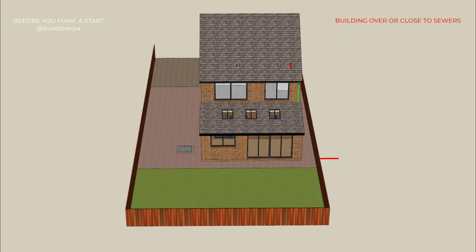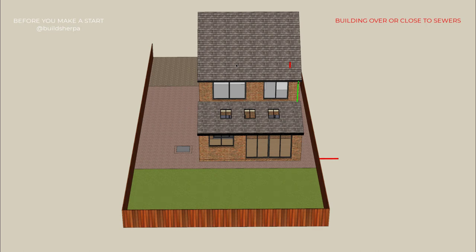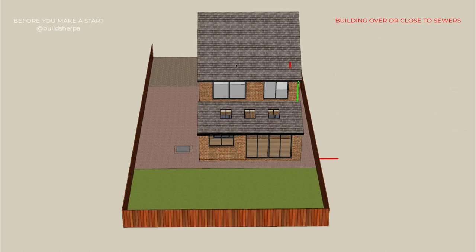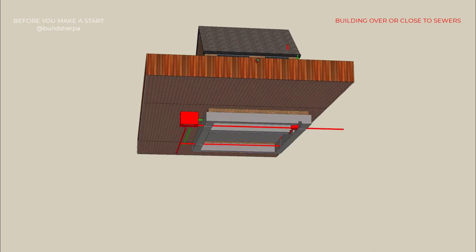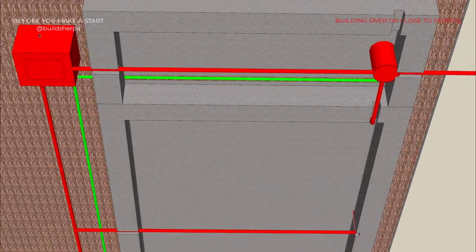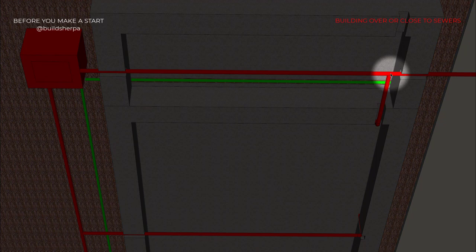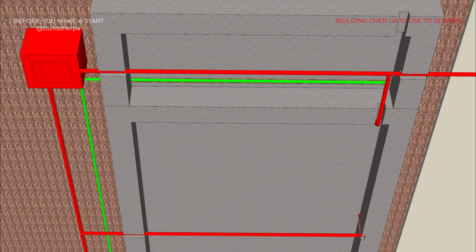If I now add a single storey extension to the rear, this covers one of the manholes. As part of the building over agreement, the sewage undertaker will add various conditions to their approval — for example, no manholes within the footprint, no imposed loads on the pipe, and no connections or only one connection. Sometimes a pipe might need to be replaced, and a post-CCTV survey would be required. In this case the manhole would have to be moved from within the footprint. If it would be difficult to move the connection outside the footprint, the sewer would have to be diverted — which isn't always possible.